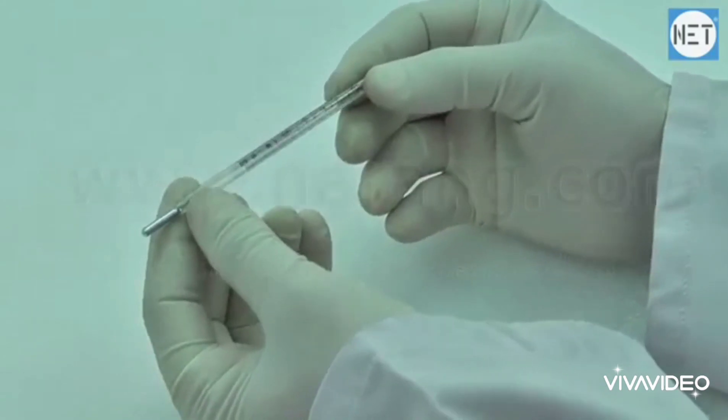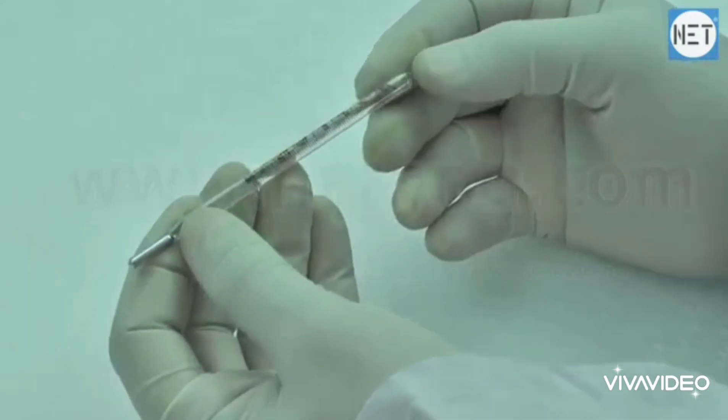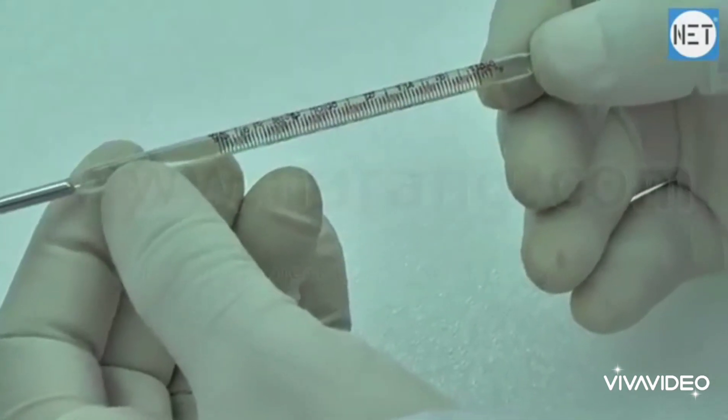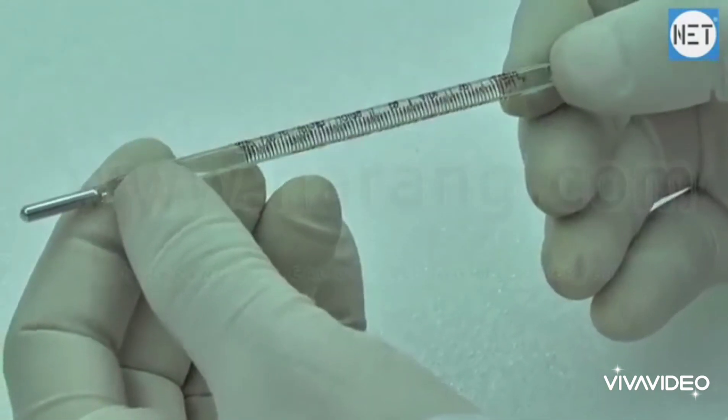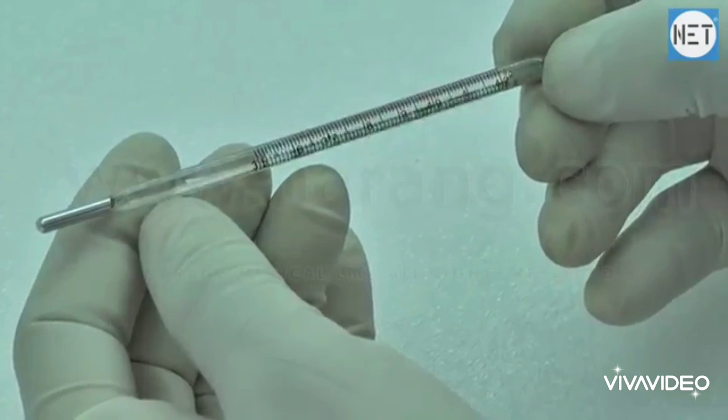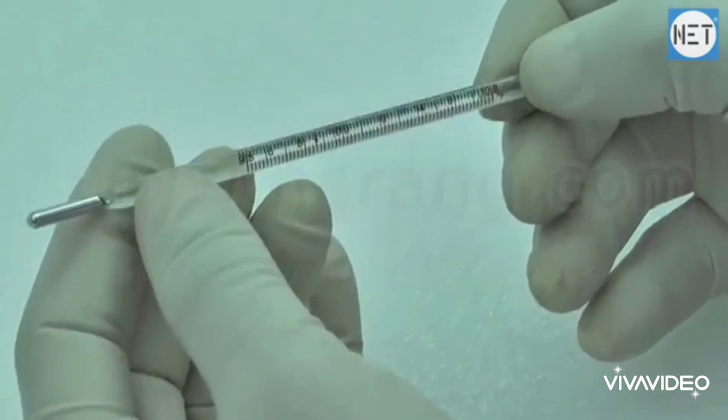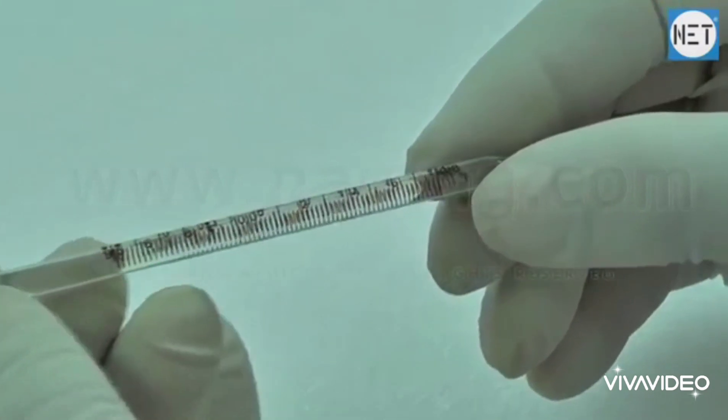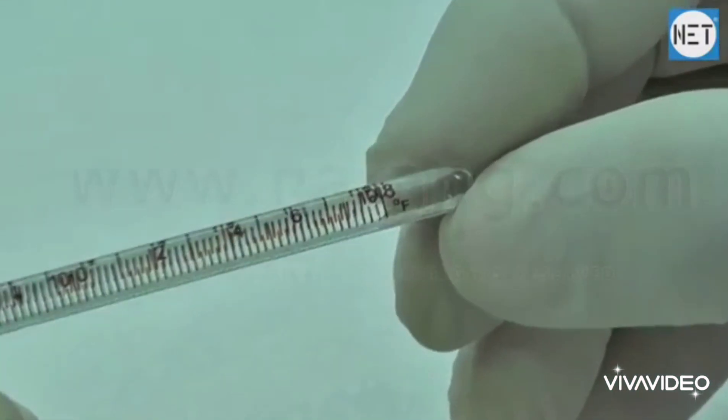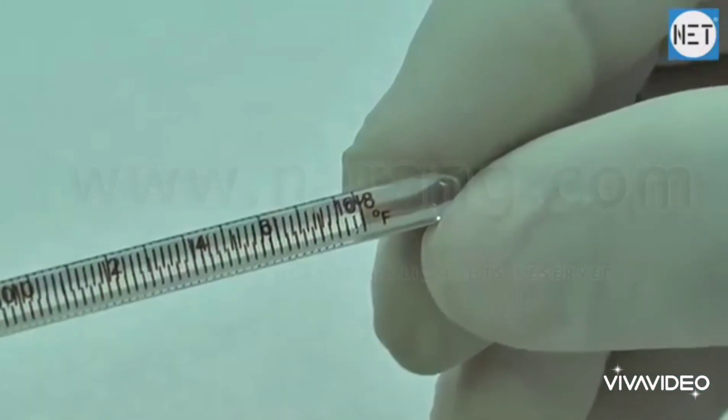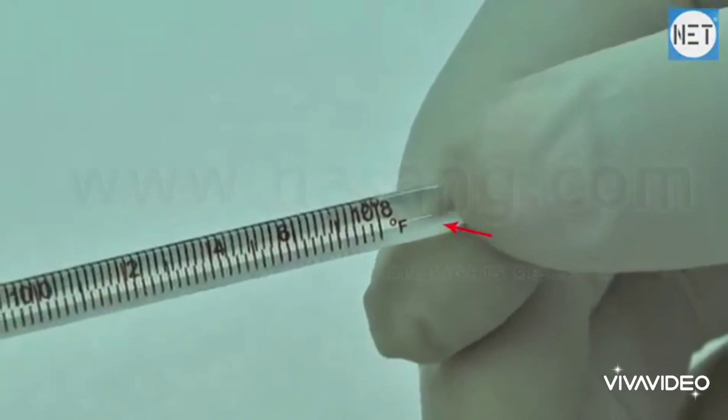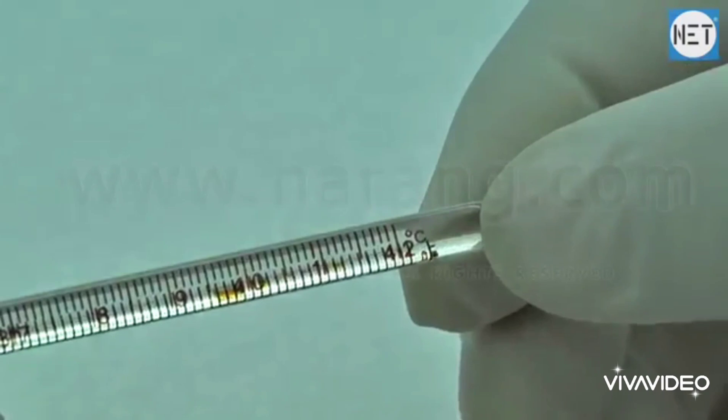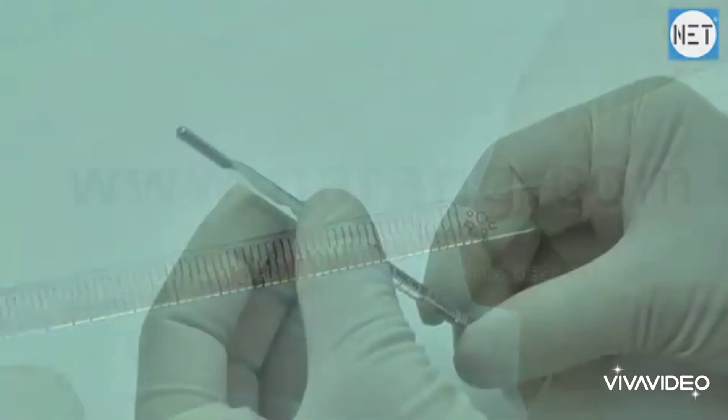Now you can see this is the common thermometer, called a clinical thermometer, which is now being used commonly in our houses or by our doctors. Here are some markings on the thermometer in degree Fahrenheit or degree Celsius, which are marked on both sides of the thermometer.